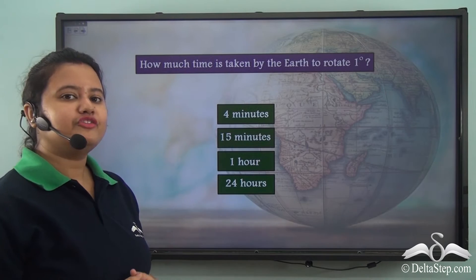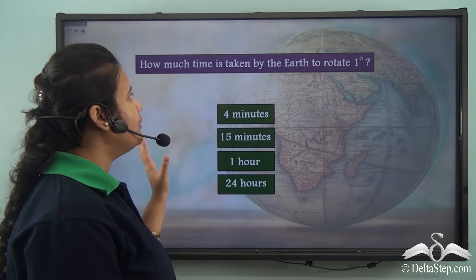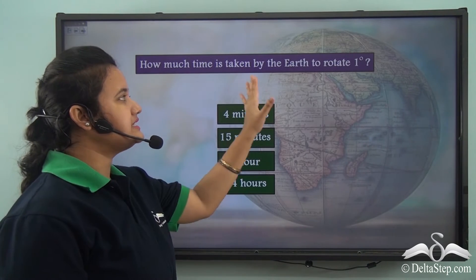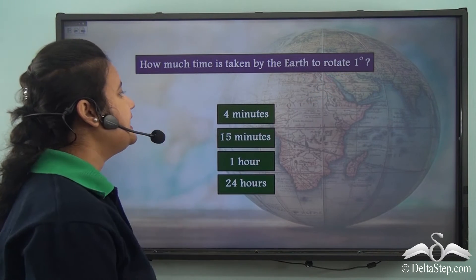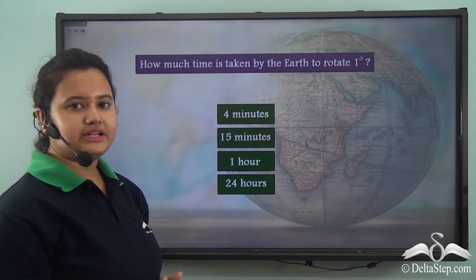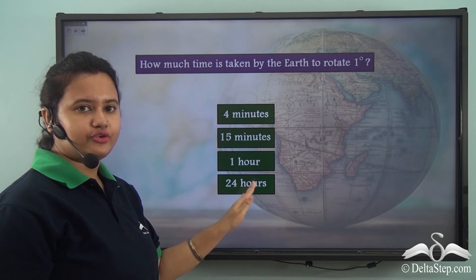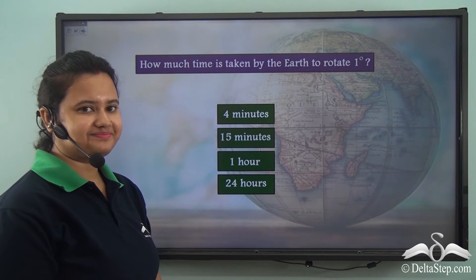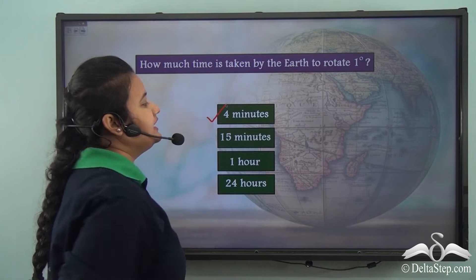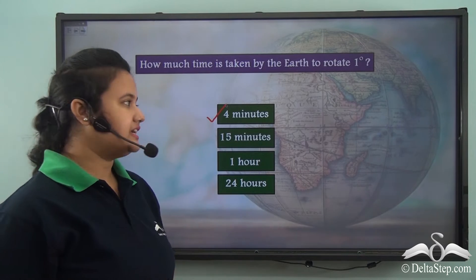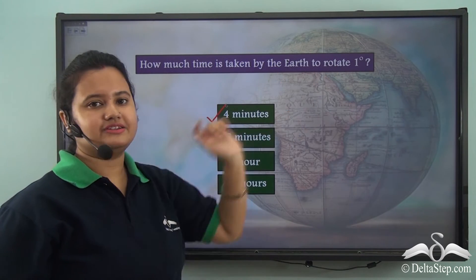Before we proceed, here is a quick question: how much time is taken by the earth to rotate by 1 degree? Is it 4 minutes, 50 minutes, 1 hour, or 24 hours? The correct answer is 4 minutes. The earth takes 4 minutes to rotate by 1 degree.